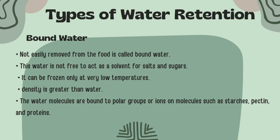Bound water is not free to act as a solvent for salts and sugars. It can be frozen only at very low temperatures, and its density is greater than that of regular water. The water molecules are bound to polar groups or ions on molecules such as starches, pectin, and proteins.